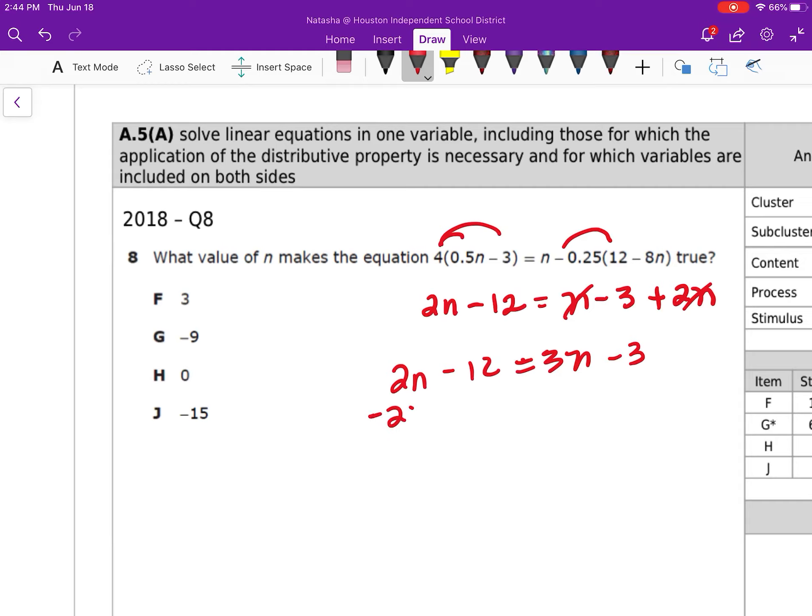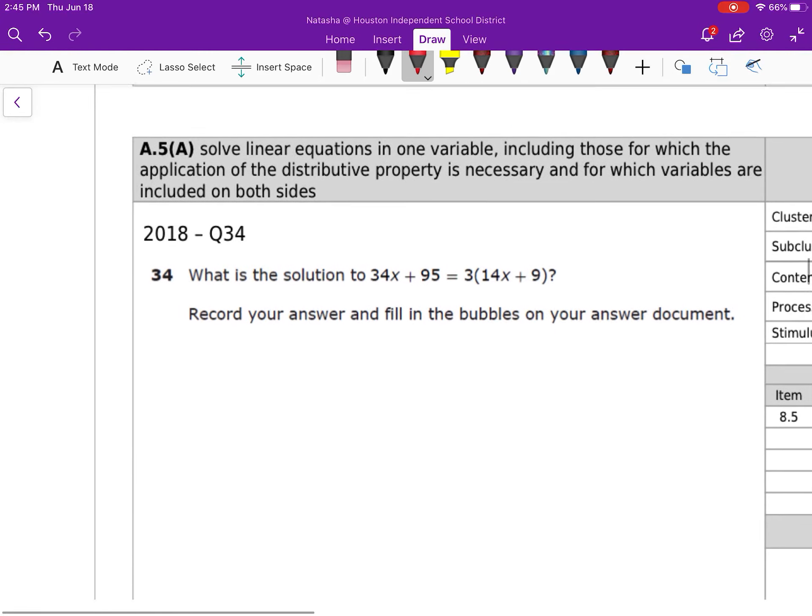I'm going to subtract 2N. The reason I do the 2 is because it will keep my N positive, and it just makes my life easier. And that becomes negative 12 is equal to N minus 3, add 3, add 3. That becomes negative 9 is equal to N. So my answer choice is G.